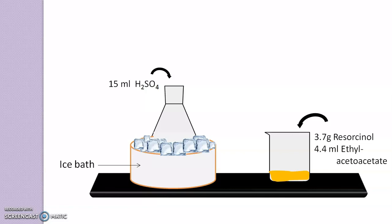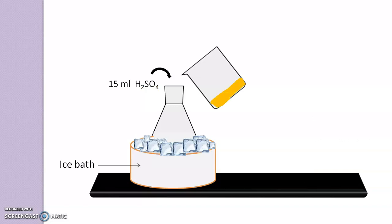Now this formed solution you have to add slowly into sulfuric acid, taking care that temperature of the reaction mixture should not rise above 10 degree centigrade. Then after that addition, you have to continue stirring for a duration of 30 to 40 minutes.